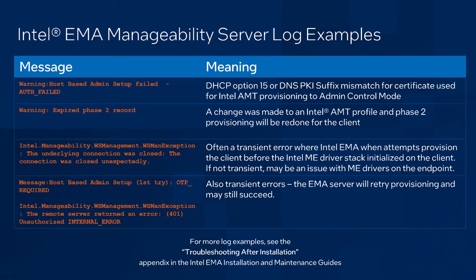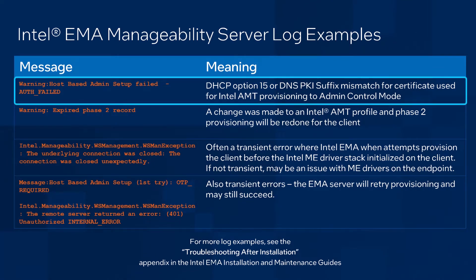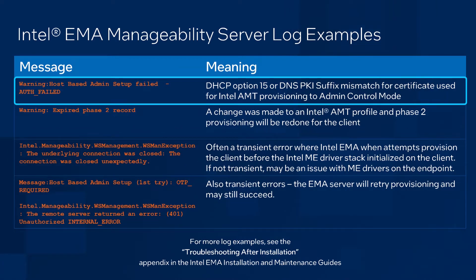Next, I'll cover a few examples of error messages you may see logged when troubleshooting the provisioning of Intel AMT. These would be visible in the manageability server logs in the Emma logs folder on the Emma server, or in the platform manager event tab for the manageability server. First, we have the warning that host-based admin setup failed with the auth failed code. This would be logged alongside an endpoint's hostname, and indicates that you're attempting certificate-based provisioning to admin control mode. When provisioning in this manner, the DNS suffix on that certificate needs to match with the DNS suffix on DHCP option 15 on a wired network connection for that endpoint, or it needs to match with a DNS PKI suffix value set manually in the MEBX interface on the endpoint.